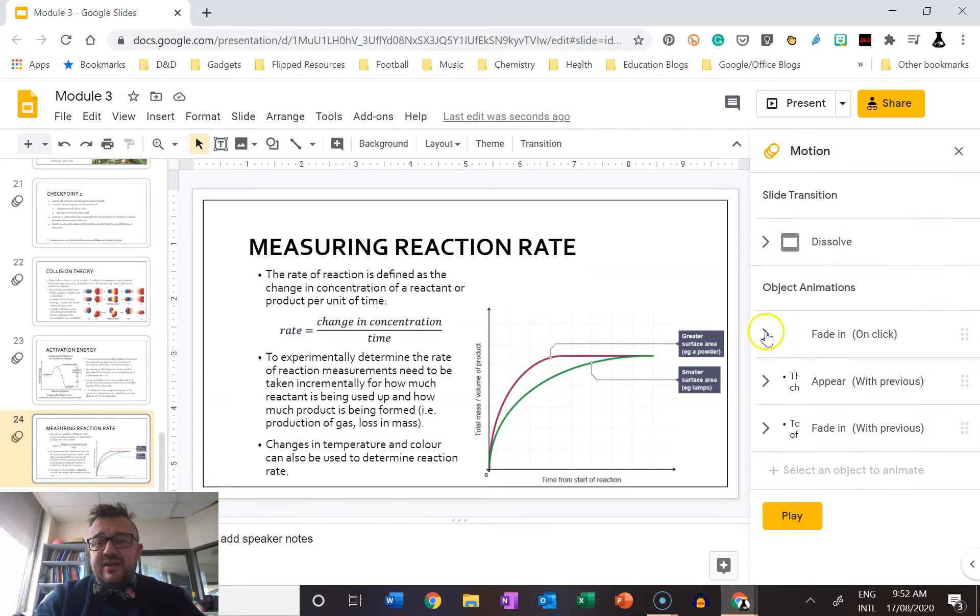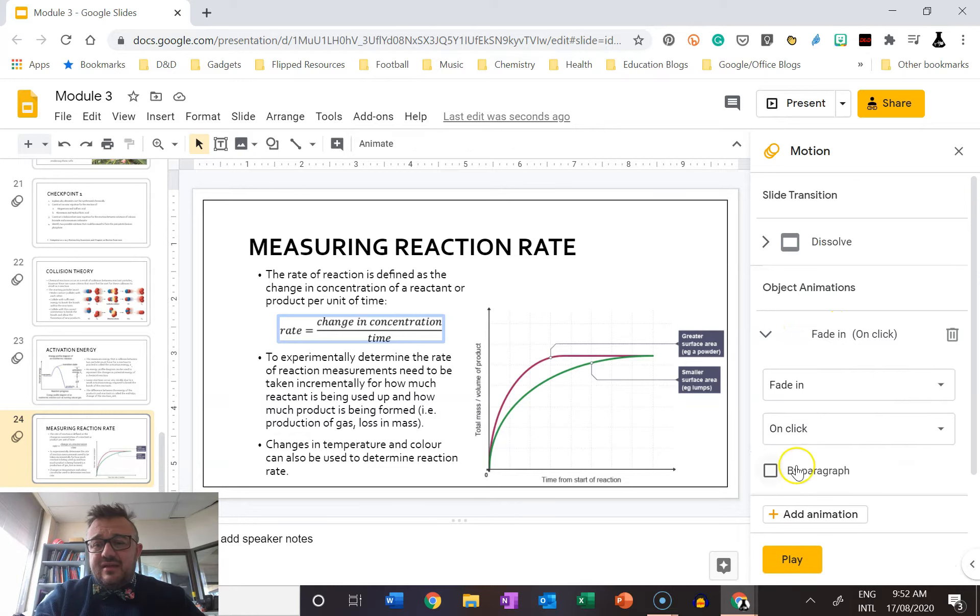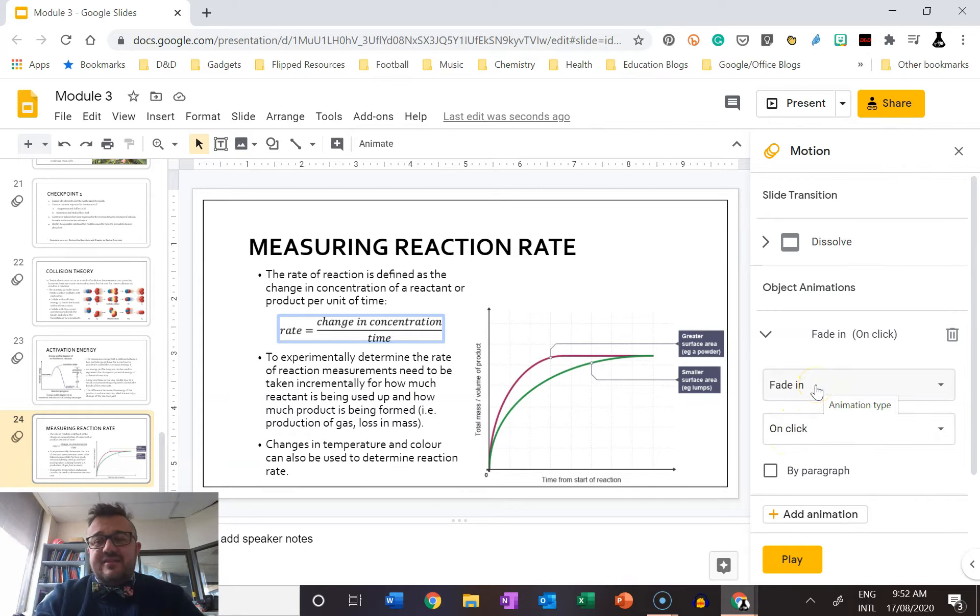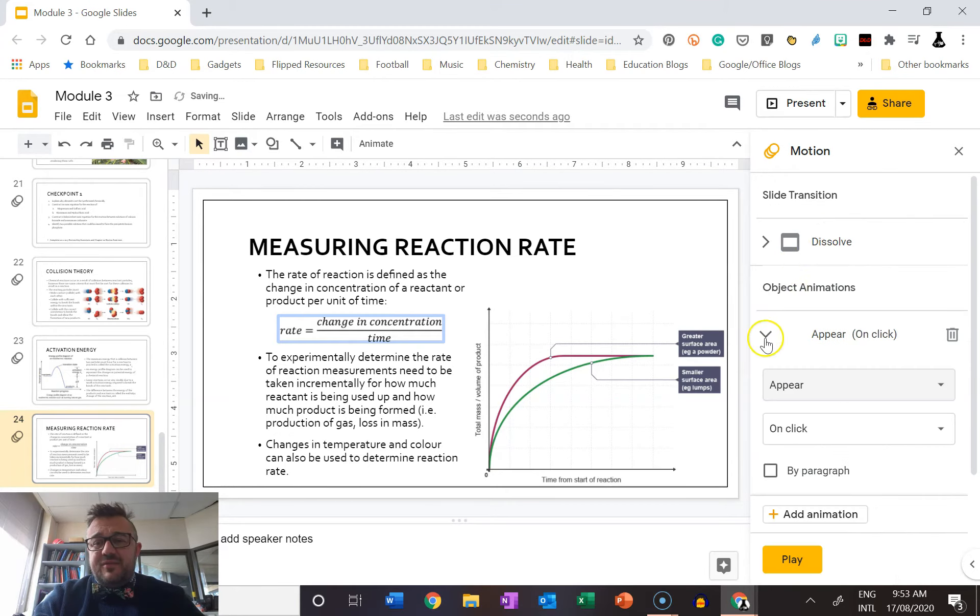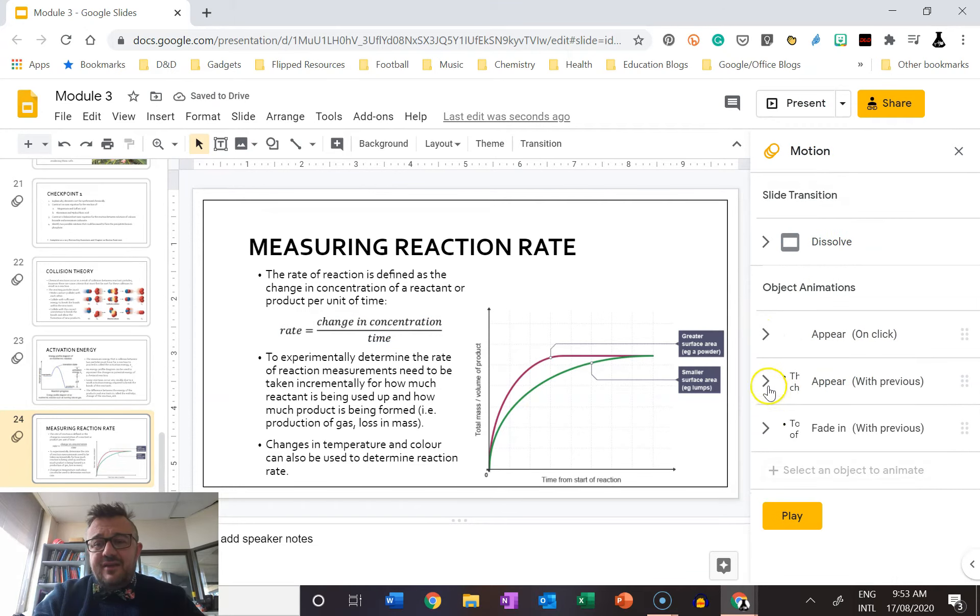And I want to go, ah okay, handshake. So this is actually something that gets a bit tricky. Again, appear, because we want to be nice and simple, and then we go with previous.